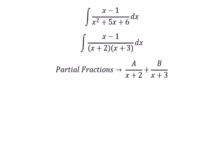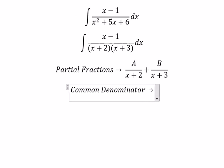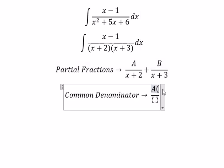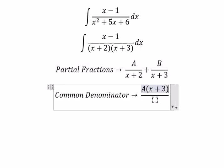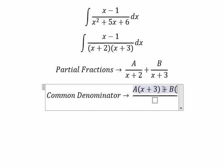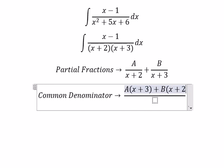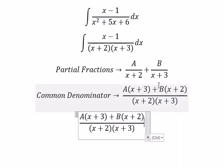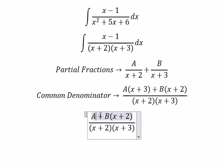Next we use the common denominator. So we have A multiplied with x plus 3, and capital B multiplied with x plus 2. We need to expand this.